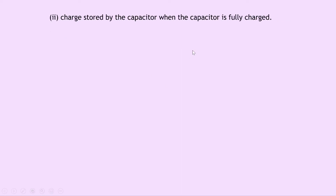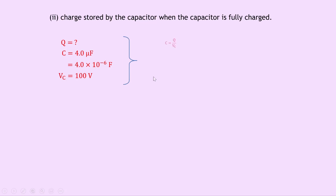Part 2 asks to calculate the charge stored when the capacitor is fully charged. Capacitance C = 4.0 × 10⁻⁶ F, and when fully charged the potential difference equals the supply voltage of 100 V. Using C = Q / VC, rearranging gives Q = C × VC = 4.0 × 10⁻⁶ × 100, giving a final answer of 4.0 × 10⁻⁴ Coulombs.